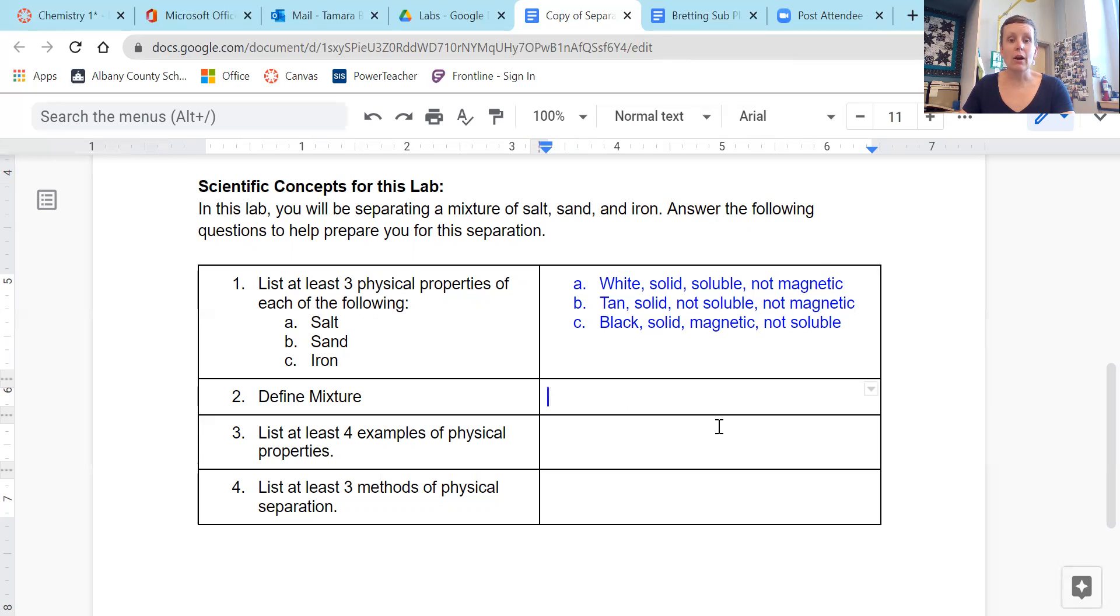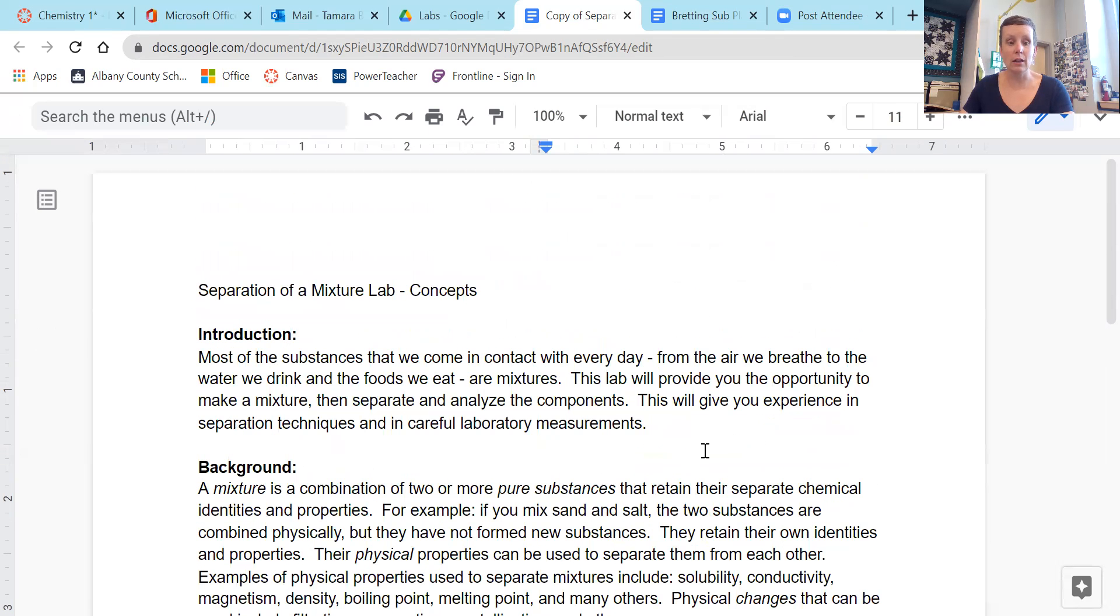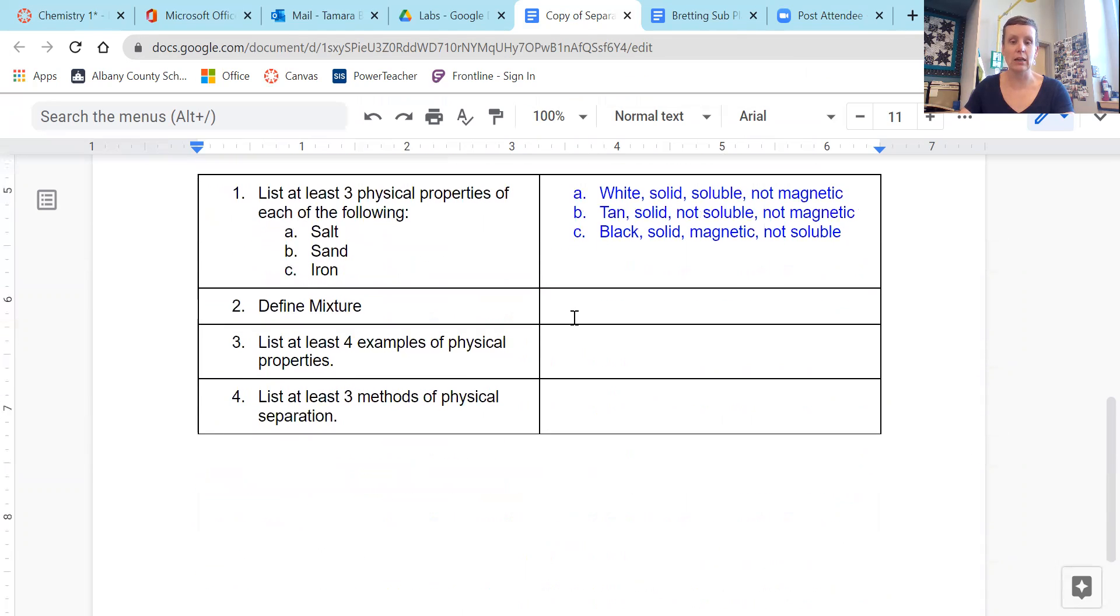Define mixture. Again, when you are having questions like this and you have an introduction up here, you might look at it because right here is the definition of mixture: a combination of two or more pure substances that retain their separate chemical identities.